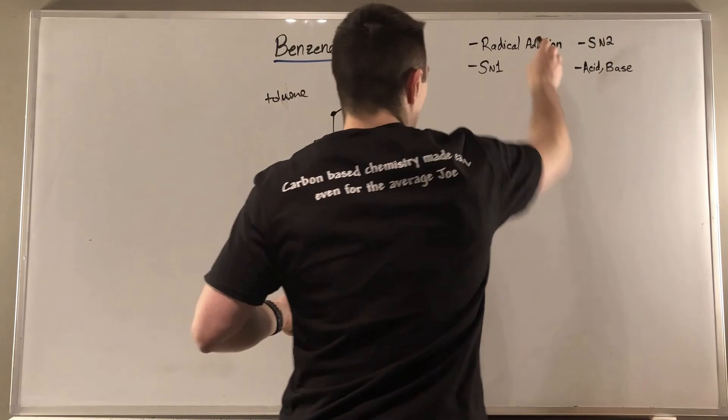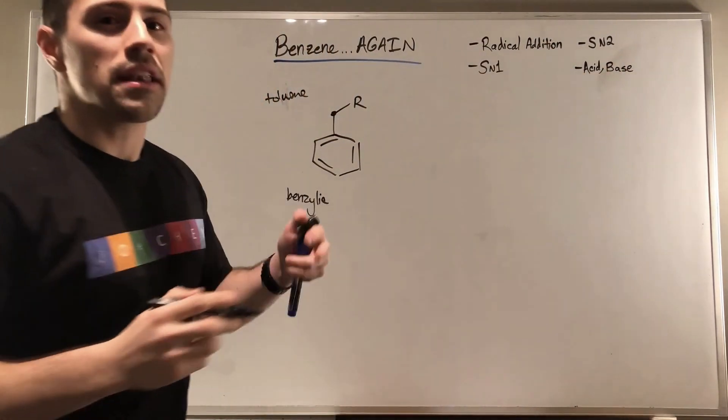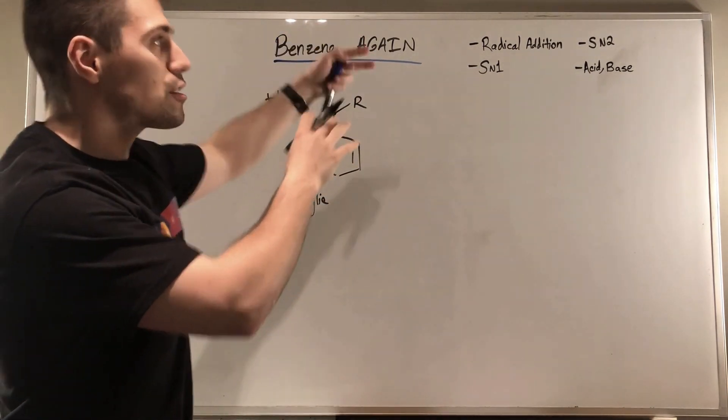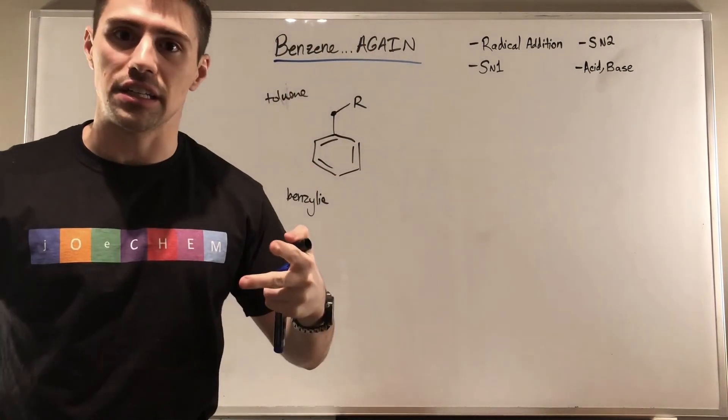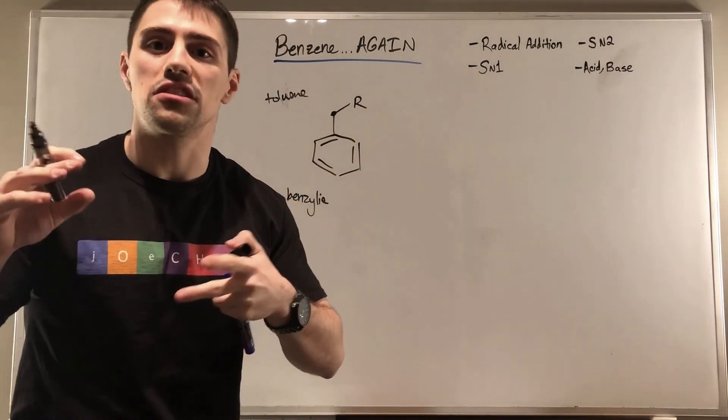We can do a whole host of chemical reaction types at that position. You can see them up here. We can do such things as radical addition, SN1, SN2, and acid-base stuff. Now, you might be thinking to yourself, a lot of those reactions up there, they require different conditions, right? And for example, SN2, we want things to be unencumbered. We need low steric hindrance.